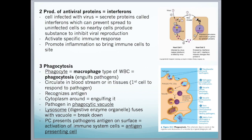Phagocytosis is the third type of non-specific immune response. A phagocyte, also known as a macrophage, is a type of white blood cell that carries out phagocytosis — the engulfment of pathogens. They are found in the blood and tissues and are the first cells to respond to a pathogen inside the body. The phagocyte recognises the antigens on the pathogen; the cytoplasm moves around the pathogen engulfing it, containing it in a phagocytic vacuole. A lysosome containing digestive enzymes then fuses with the vacuole and breaks down the pathogen. The antigen from the pathogen can then be presented on the phagocyte surface, activating other immune system cells.